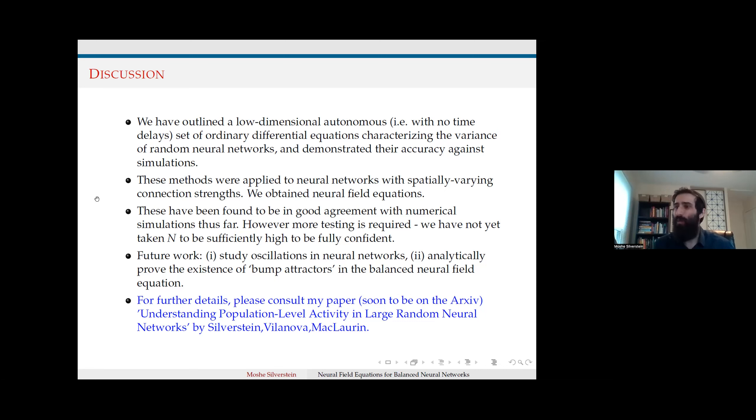We hope to take things up to a larger N limit. Because of the tractability of our equations, we hope to study more rigorously the oscillations that can arise in these neural networks. We're working on analytically proving the existence of things like bump attractors in our balanced neural fields. I know I've glossed over quite a bit, so I apologize. All the details will be forthcoming in a paper we hope to have soon. We're more than happy to forward that to anybody interested.